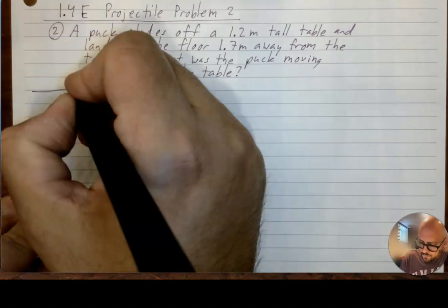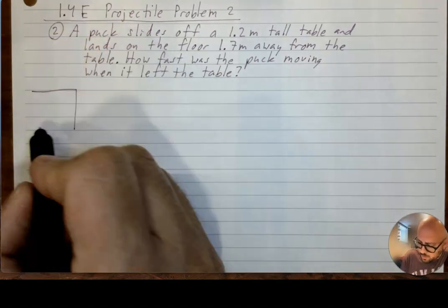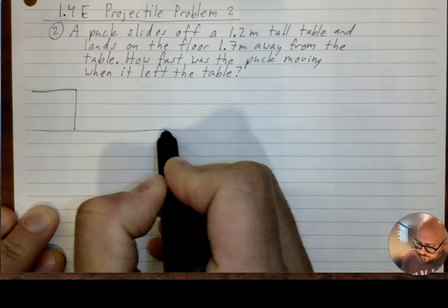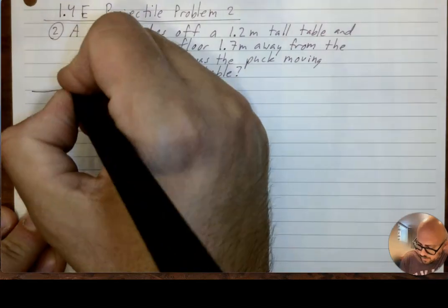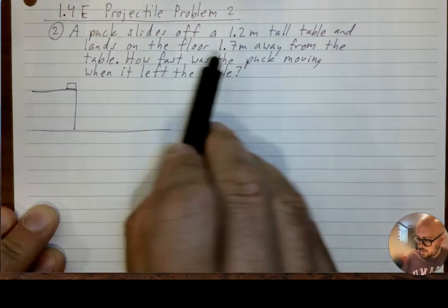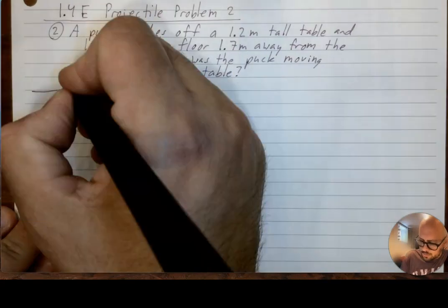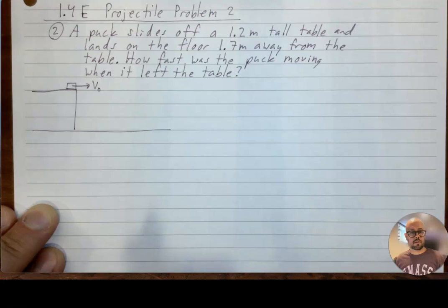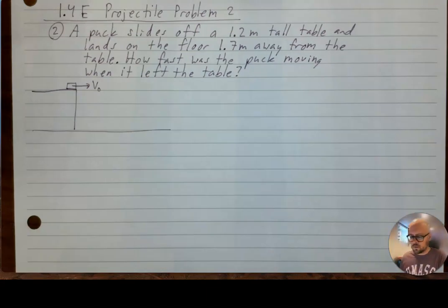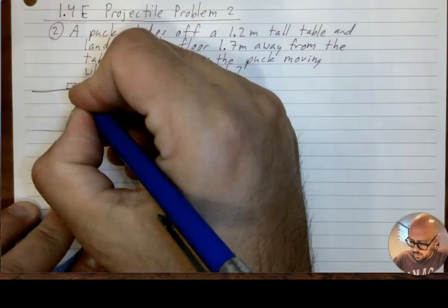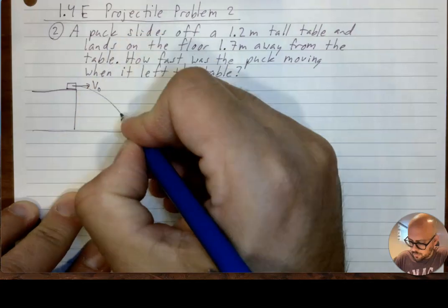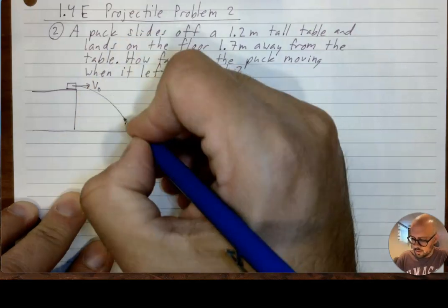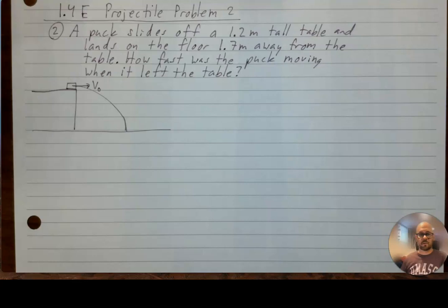So here is the table, and then here is the floor, and here is the puck. Now, the puck slides off a tall table. Tables, I should mention, are flat, and so the initial velocity is going to be in that direction, and then once it starts to fall, it's going to fall in the shape of a parabola. So this is just the right half of a downward-facing parabola.